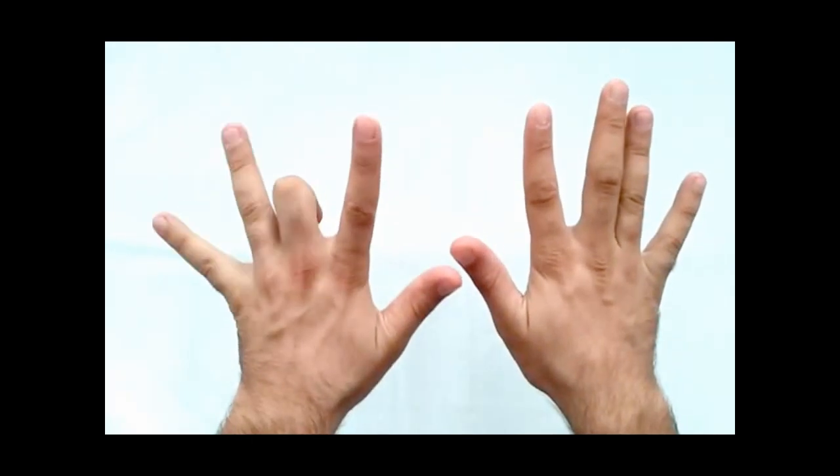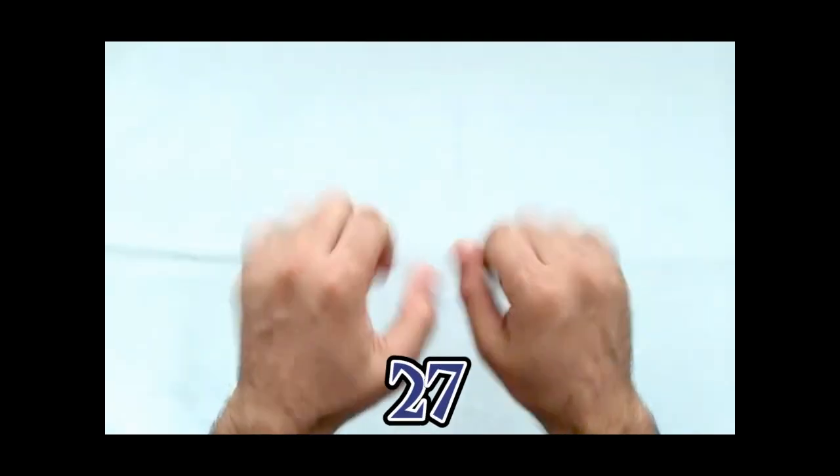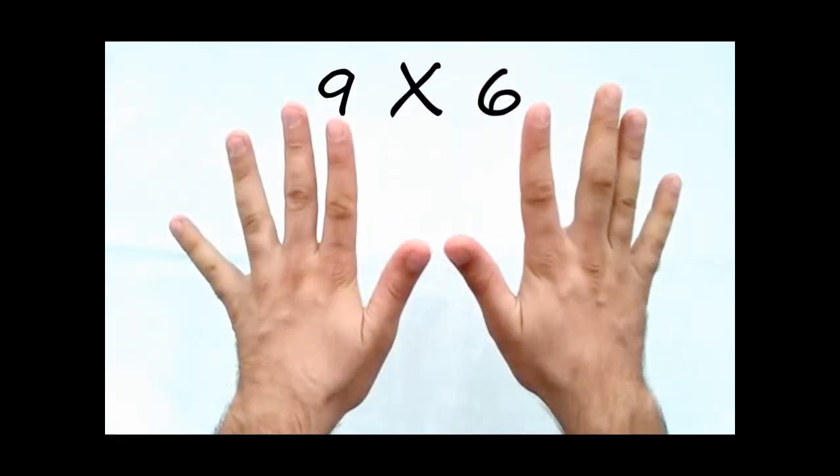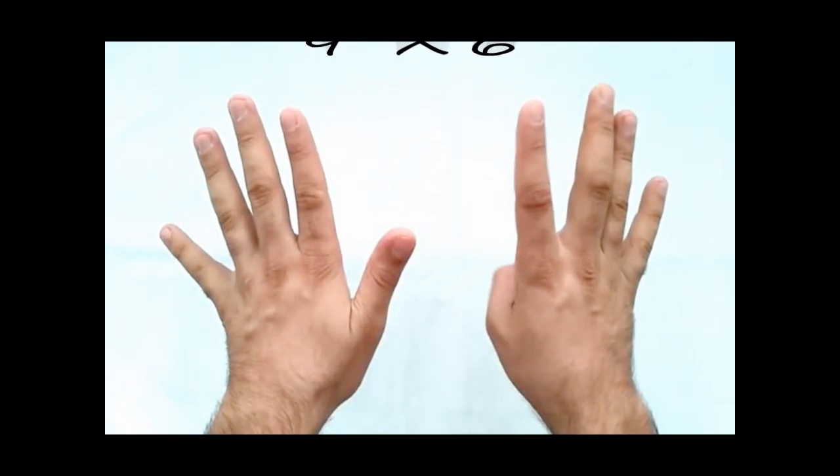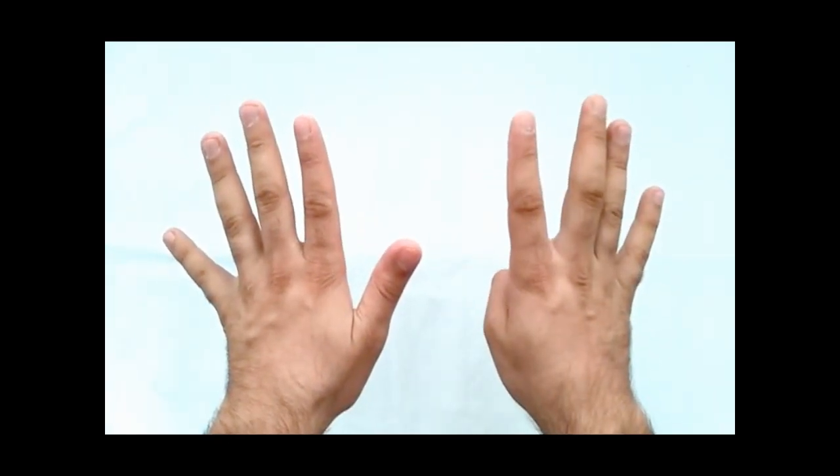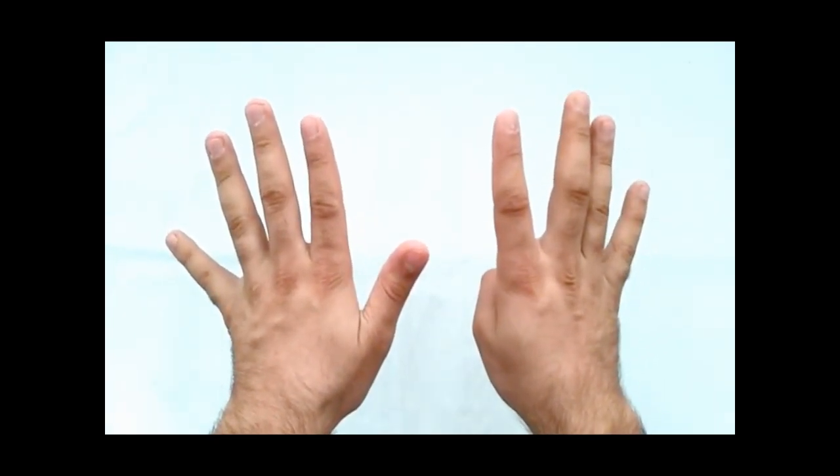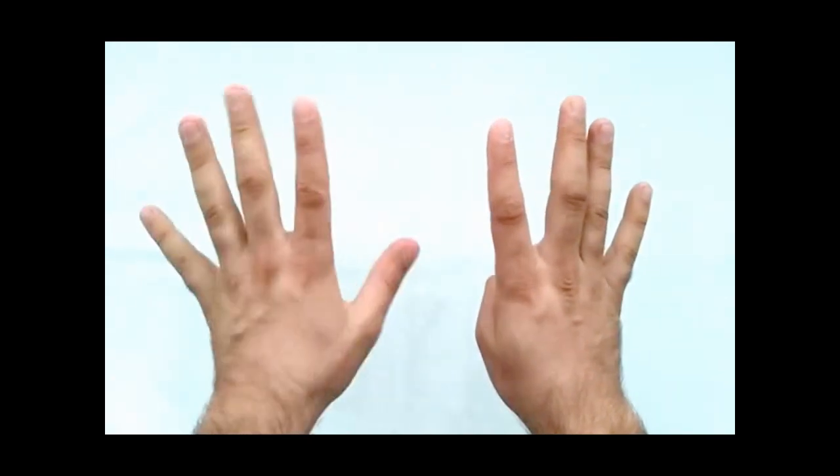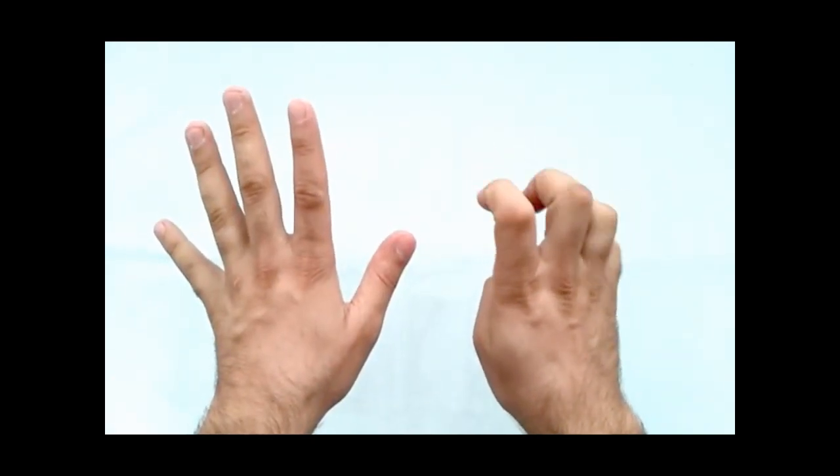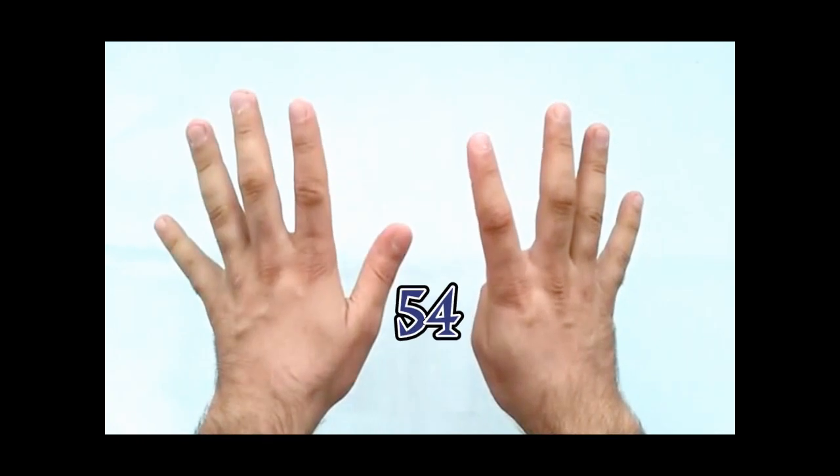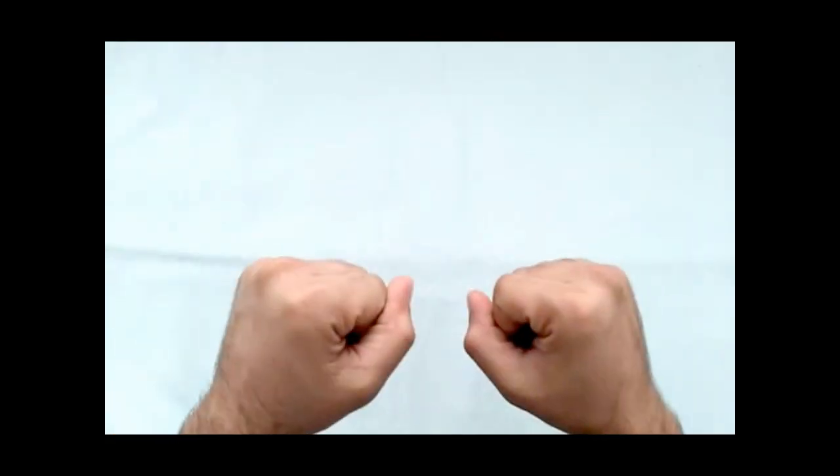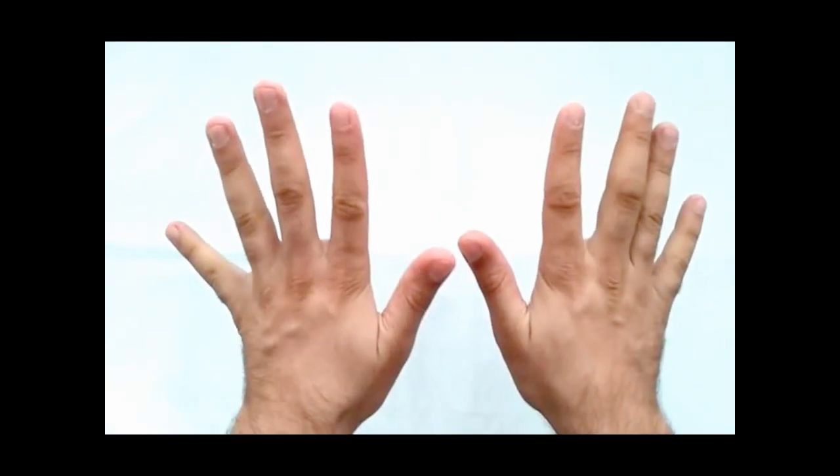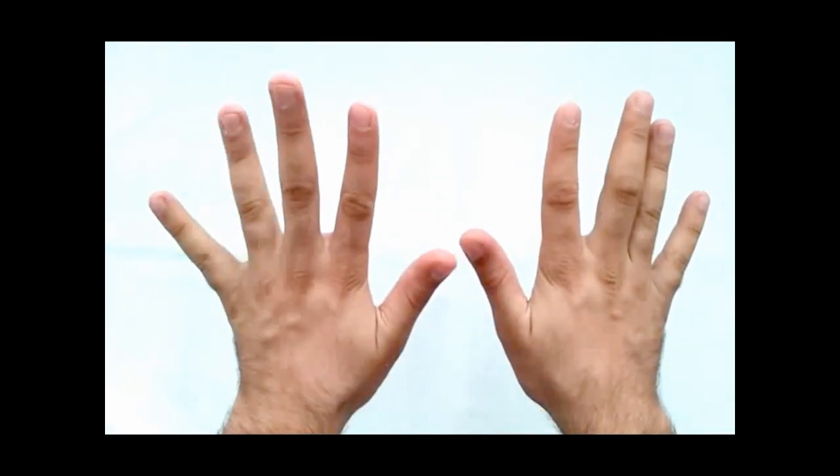Let's try nine times six. Bring the sixth finger down - one, two, three, four, five, six. Now you have five fingers on the left side and four fingers on the right side. So the answer is 54. It works with all of your fingers.